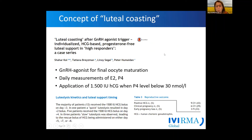Now we come to the concept of luteal coasting, developed by the group of Shaya Kol from Israel. The idea is a GnRH agonist trigger for final oocyte maturation followed by monitoring of estradiol and progesterone levels. hCG is administered when progesterone levels fall below 30 nmol/L, approximately 10 ng/mL. They showed that this bolus was typically given around day three after egg collection, with just one patient having very fast luteolysis, and with this approach they reached a very nice pregnancy rate.